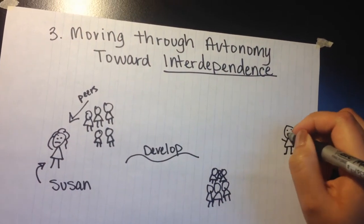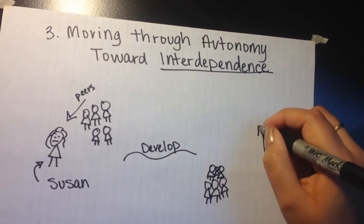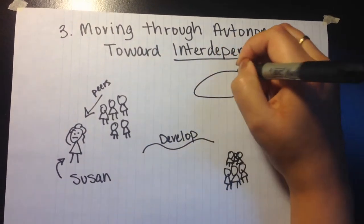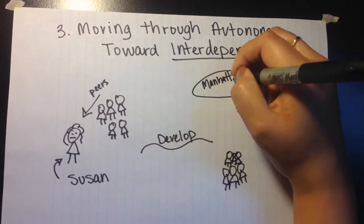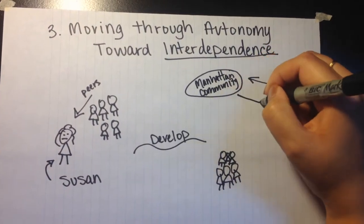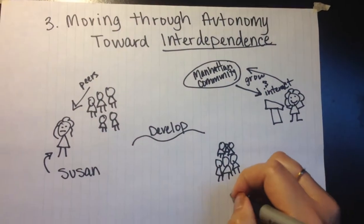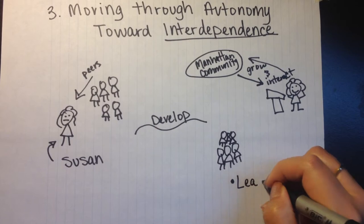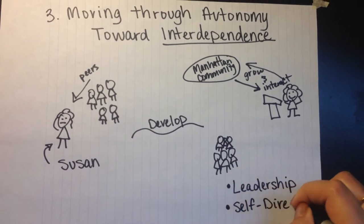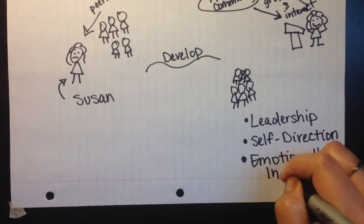Through her sorority, she is able to achieve leadership positions in which she can voice her own opinions and ideas. She receives support from her sorority sisters and the Manhattan community. This growth and interaction allows her to develop leadership opportunities, self-direction, and ultimately permits her to become emotionally independent.